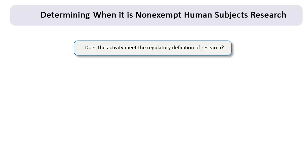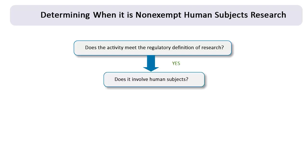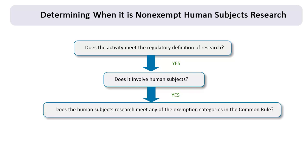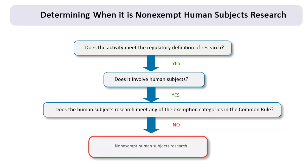First, ask: does it meet the regulatory definition of research in the Common Rule? If the answer is yes, then ask: does the research involve human subjects, as defined in the Common Rule? If the answer is yes, then ask: does the human subjects research meet any of the exemption categories in the Common Rule? If the human subjects research does not qualify for any of the exemptions, then it is non-exempt human subjects research.